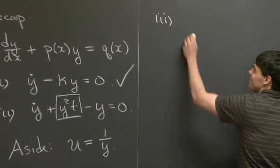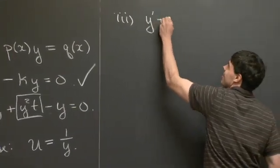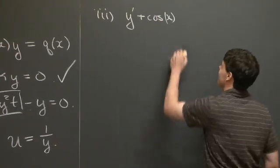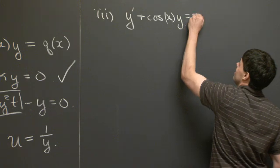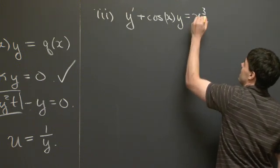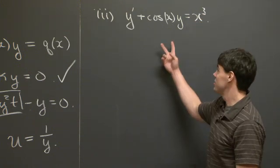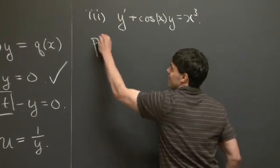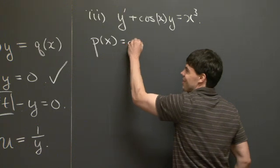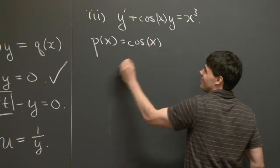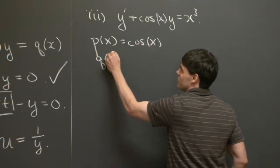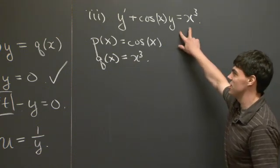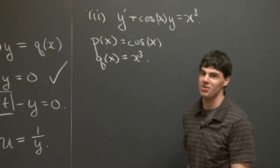For part 3, we have y-prime plus cos(x) times y equals x-cubed. This is a linear equation because we can identify p(x) with cosine x and q(x) with x-cubed. So this equation has the general form of a linear ODE.